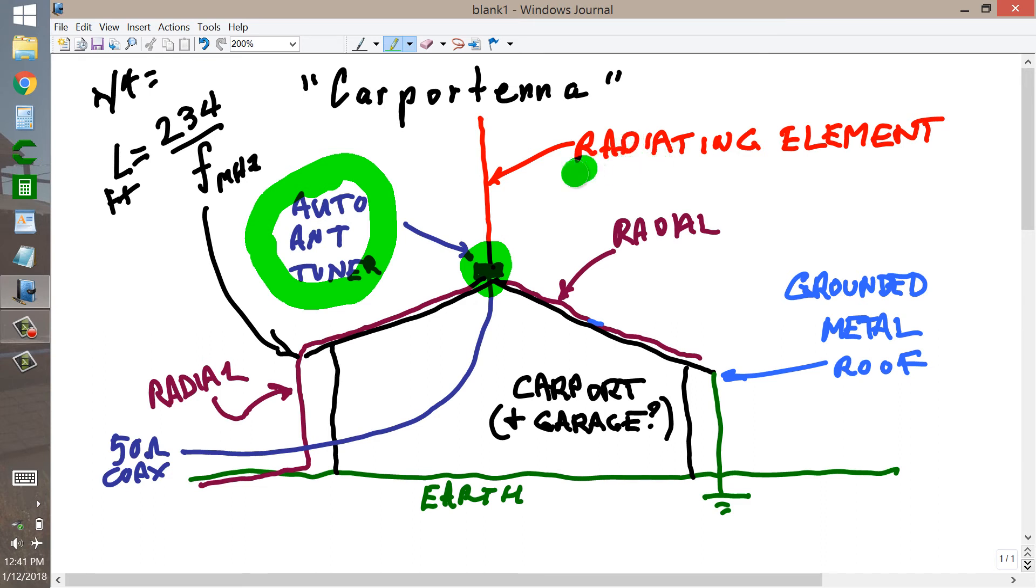But the primary radiating element can be a random length element. No traps, no loading coils, none of that stuff. That's all taken care of. Resonance is obtained by the automatic antenna tuner. That is my suggestion for this viewer based on my knowledge of antenna theory and design. It's sort of an optimized situation.